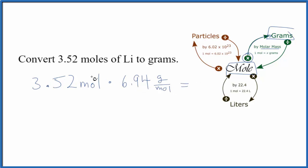So to do this, we just multiply these together. We have moles on top and the bottom, they cancel out. We're going to be left with grams. So we have a total of 24.43 grams of lithium in 3.52 moles.